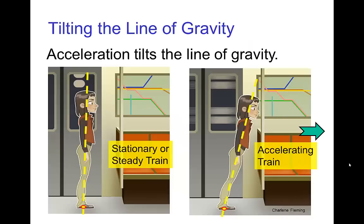Let's start with a simple example of how this works. If a character is standing on a train moving at a constant speed, or the train is just sitting still, then the line of gravity goes straight up and down. On the other hand, if the train accelerates forward, then to stay in balance the character needs to lean forward. The acceleration of the train combines with the acceleration of gravity, causing the line of gravity to tilt in the direction of the accelerating train.